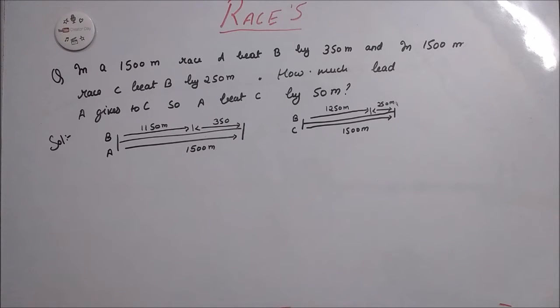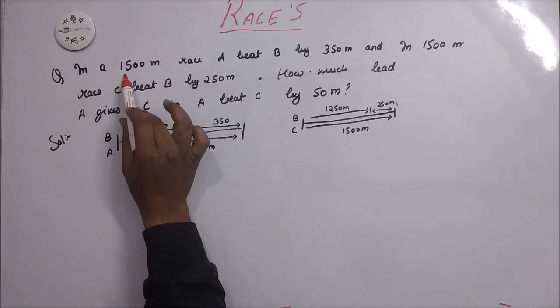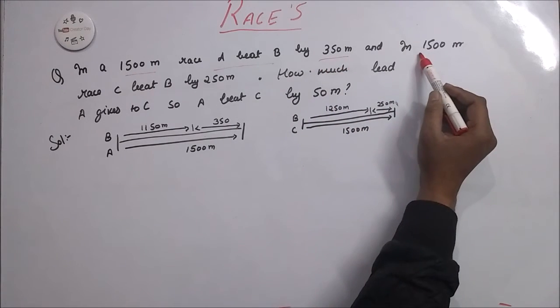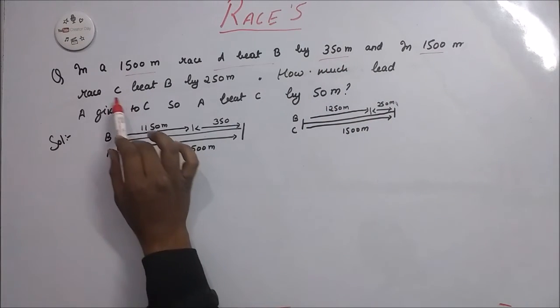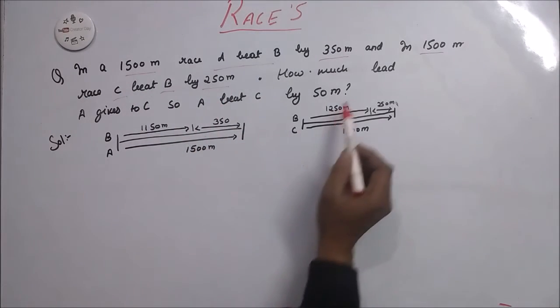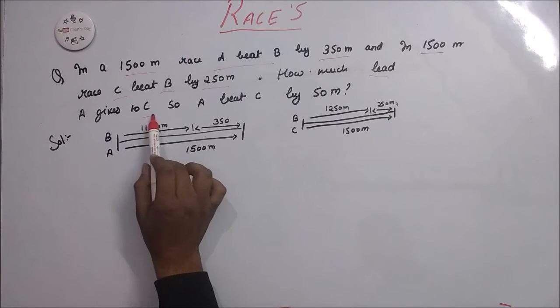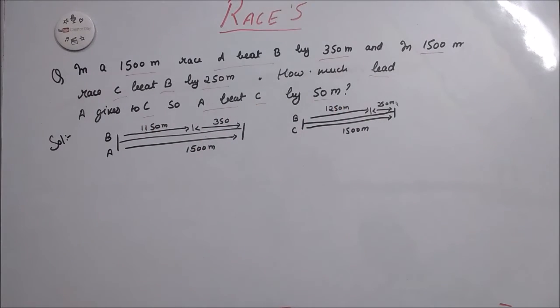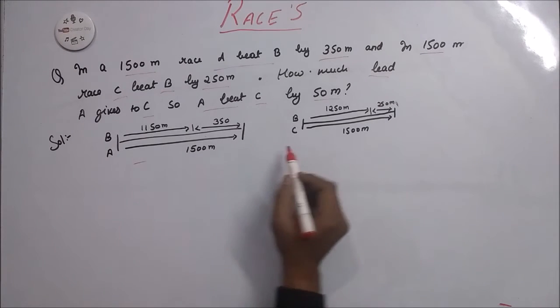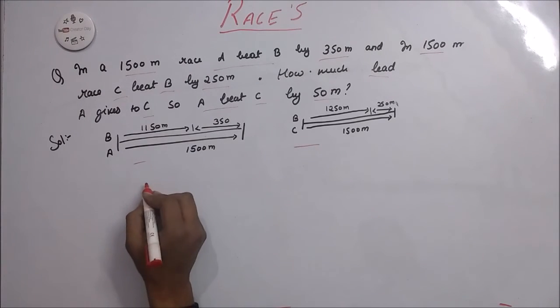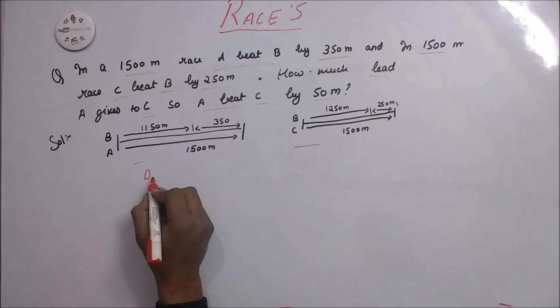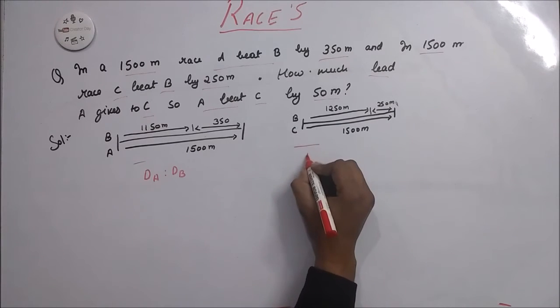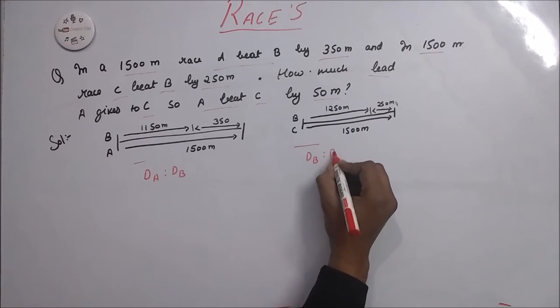Now here is question number 7. In a 1500 meter race A beat B by 350 meters. And in a 1500 race C beat B by 250 meters. How much lead A gives to C so A beat C by 50 meters. There is a diagram. According to this we take ratio of distance covered by A, distance covered by B, distance covered by B, distance covered by C.